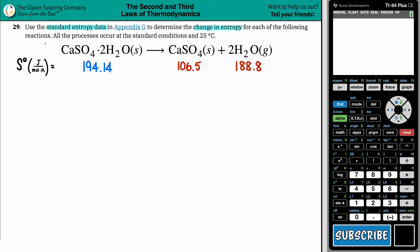Okay, so we have the balanced equation. CaSO4·2H2O, so we got a hydrate here, will yield CaSO4, calcium sulfate, plus two waters.